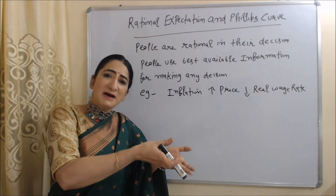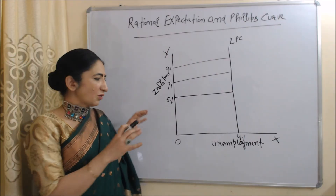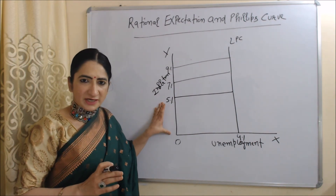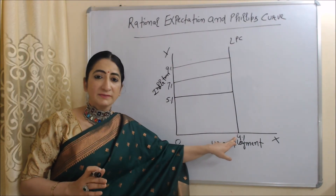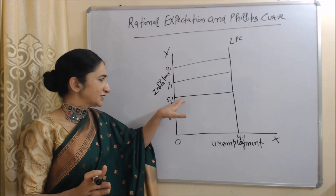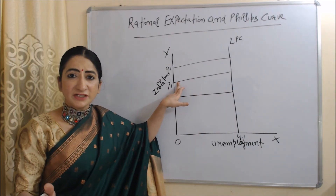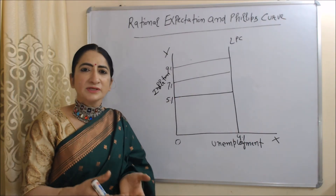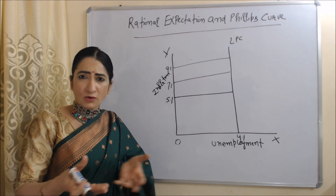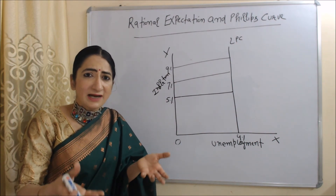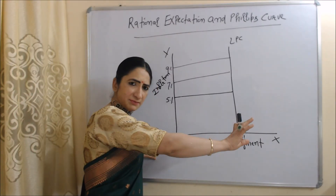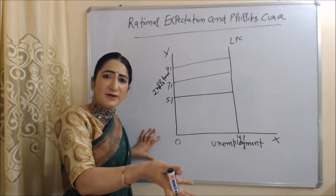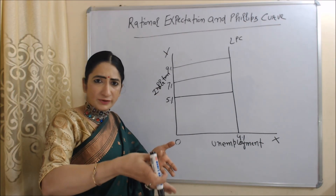In this diagram, on the x-axis we have unemployment and on the y-axis we have inflation. Initially, the inflation rate is 5% and the unemployment rate is 4% — this is called the natural rate of unemployment. Suppose through any government policy inflation increases from 5 to 7%. As inflation increases, employees immediately predict that their real wage rate will fall, so they immediately demand a higher wage rate. As employees demand higher wages, the profit of the producer falls. As profit falls, they will not increase production, and if they are not increasing production, they cannot hire more employees. As a result, unemployment remains the same in the economy.